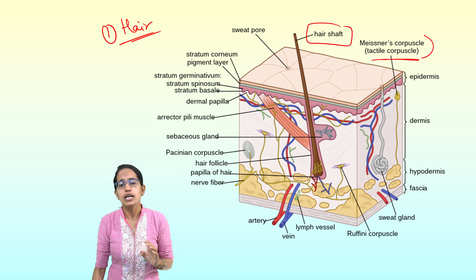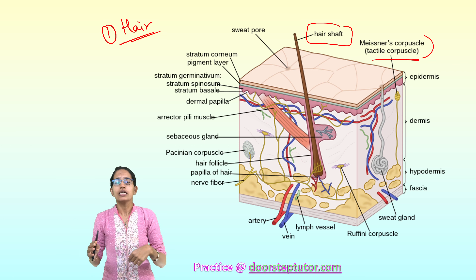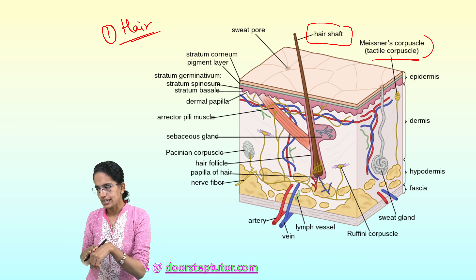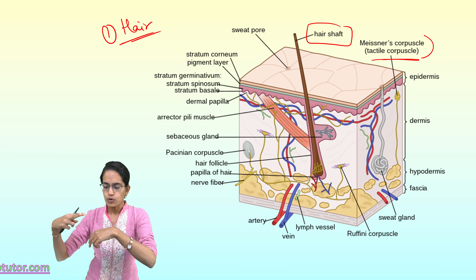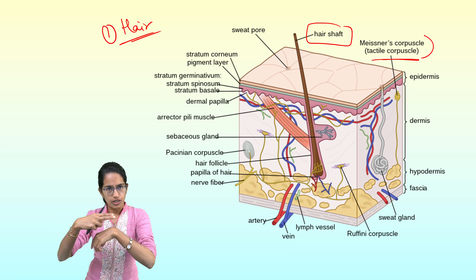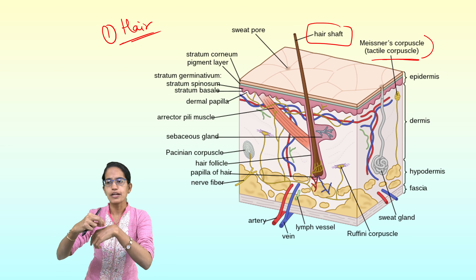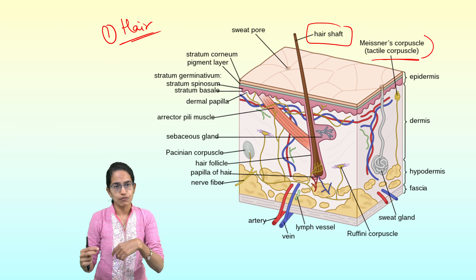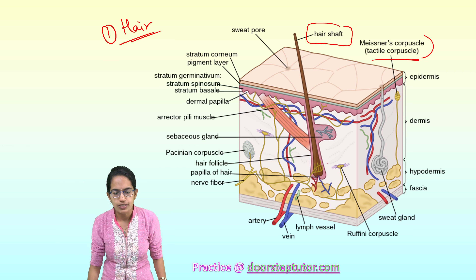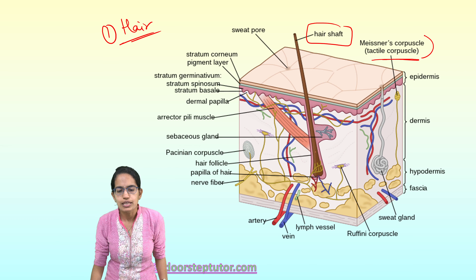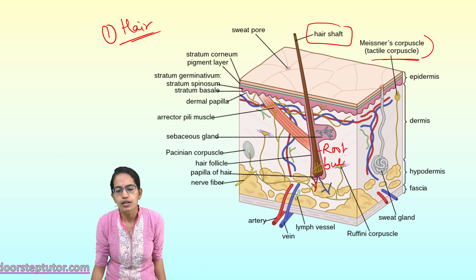Hair has three important components. The outermost is the hair shaft, which is the visible part — it is non-living, keratinized, and cornified with flat cells. If you cut the hair with scissors you won't feel pain, but pulling it would cause pain because the hair extends deeper into the dermis layer.